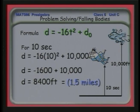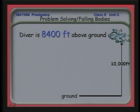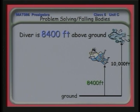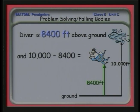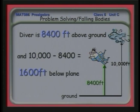Just for fun, let's look at how far the diver has fallen from the plane. We know that at 10 seconds, the diver is 8,400 feet above the ground. Taking the original 10,000 feet and subtracting 8,400, we find that in those 10 seconds the diver is 1,600 feet below the plane.